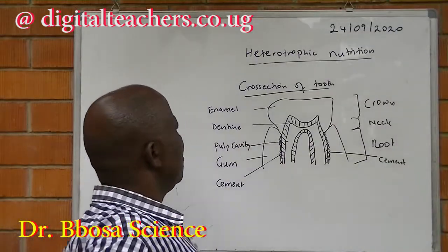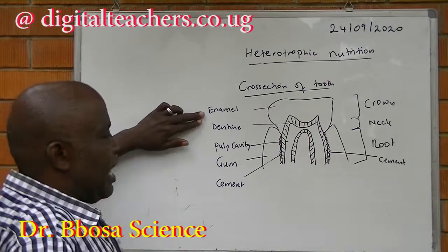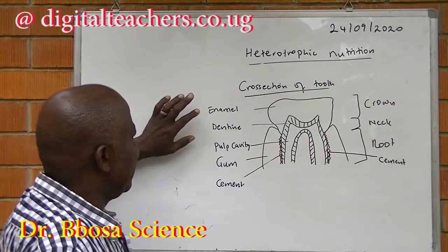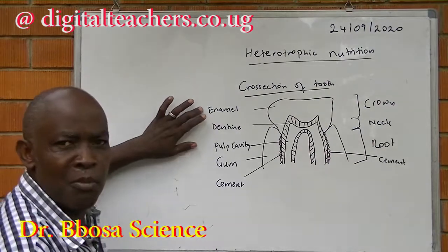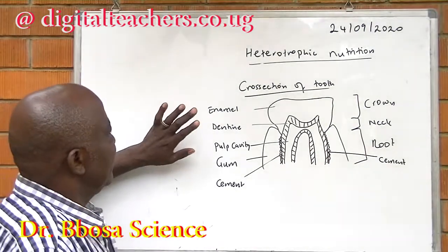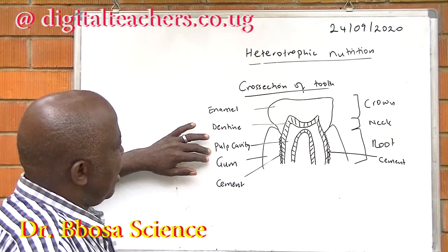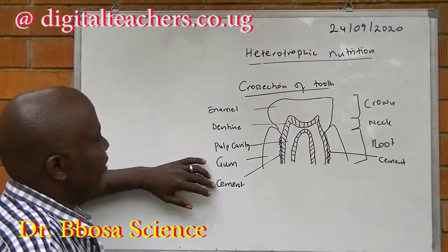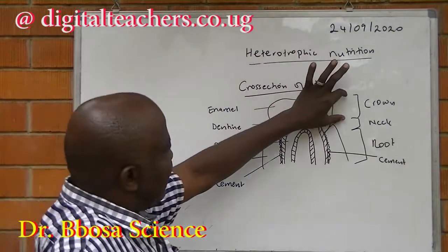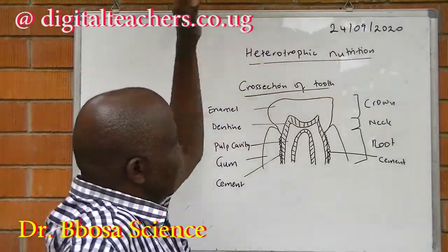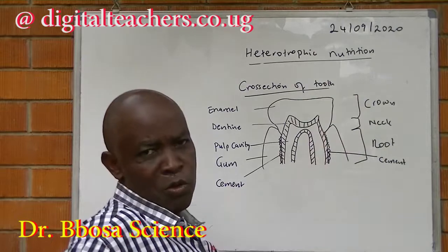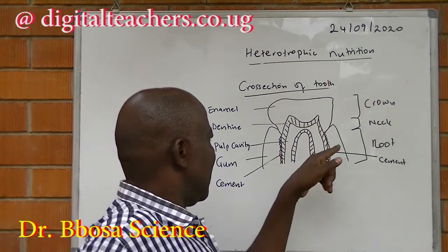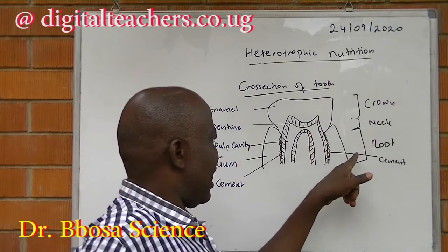The structure of a tooth includes enamel — the outermost part and the hardest substance in the body — dentine, pulp cavity, gum, and cement. The part outside the gum is called the crown, then the root is the part below the gum. The intersection between the crown and root is called the neck.